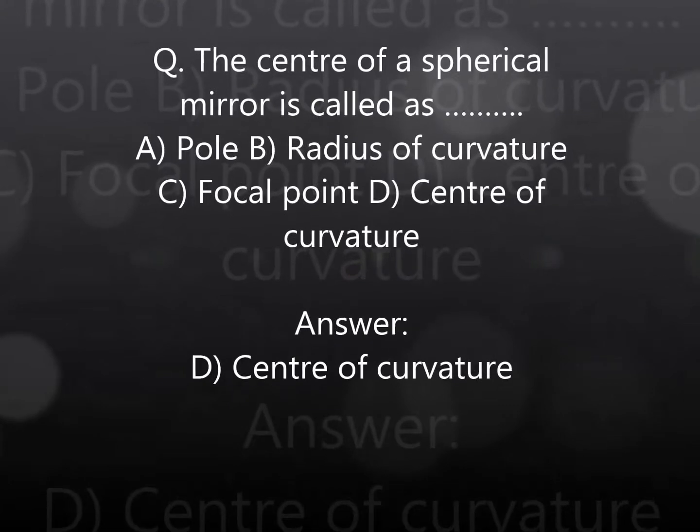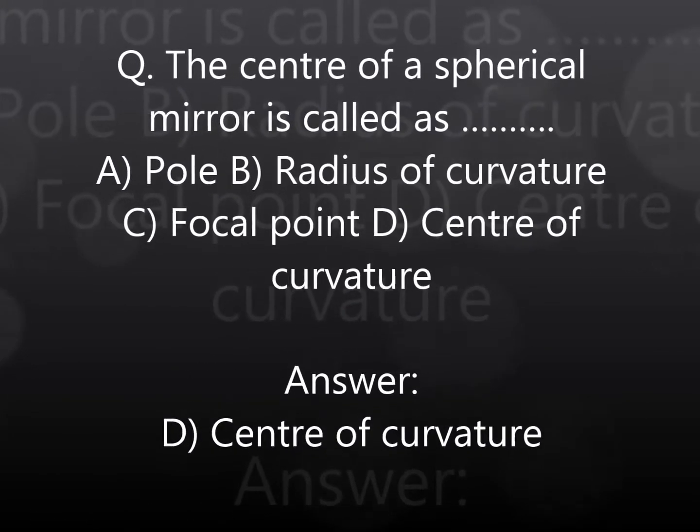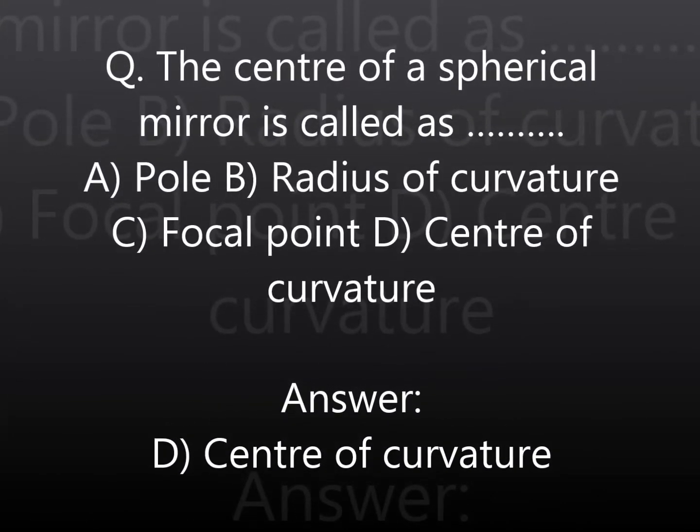The center of a spherical mirror is called as: A. Pole, B. Radius of Curvature, C. Focal Point, D. Center of Curvature. Answer: D. Center of Curvature.